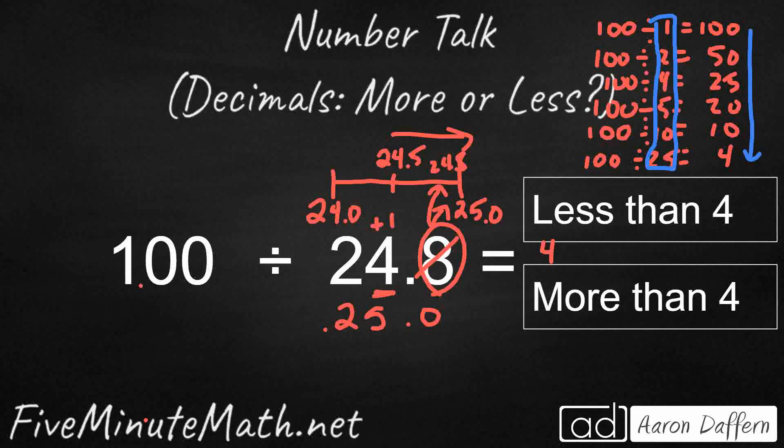Because if I'm dividing 100 into one group, there's going to be 100 in that group. If I divide 100 into two groups, that's going to be 50 in each group. If I divide 100 into four groups, that's 25 in each group.